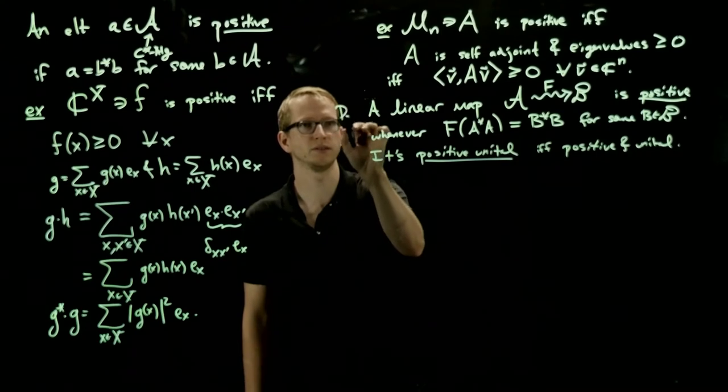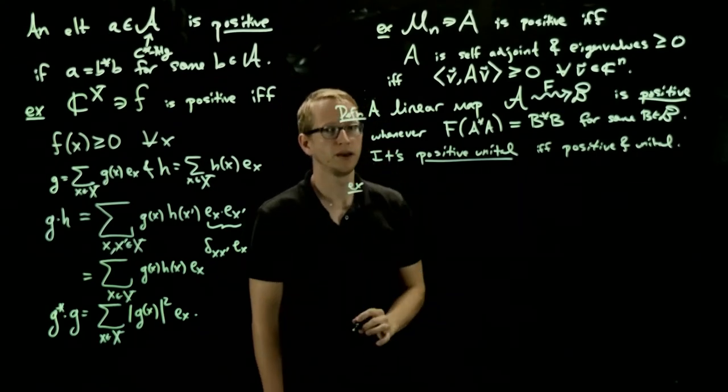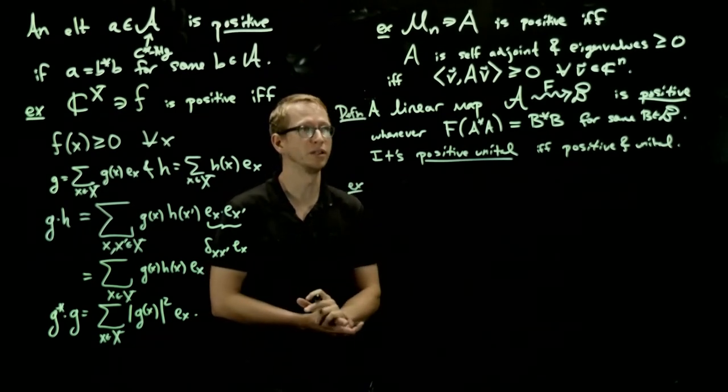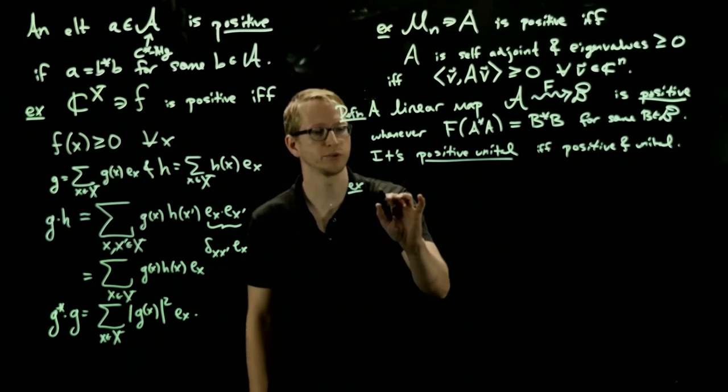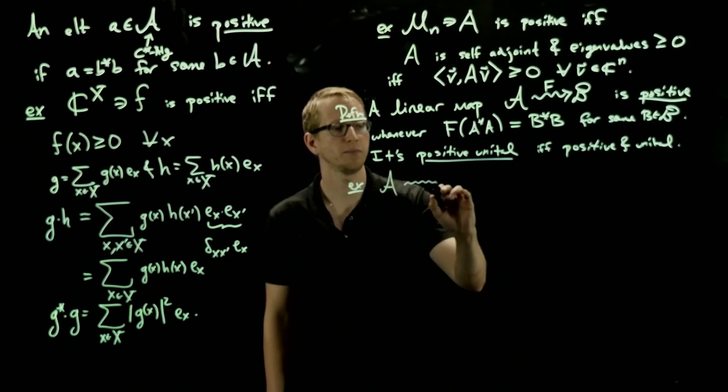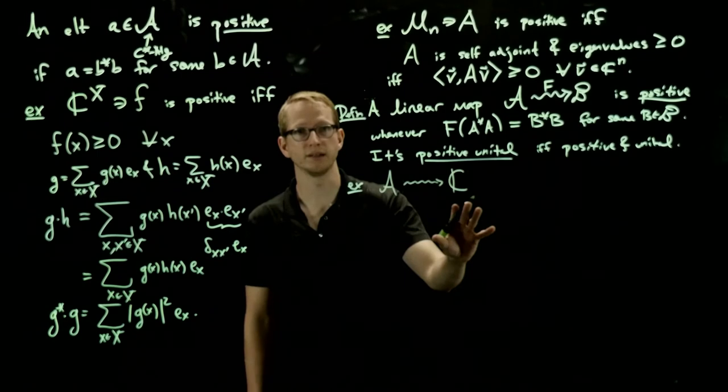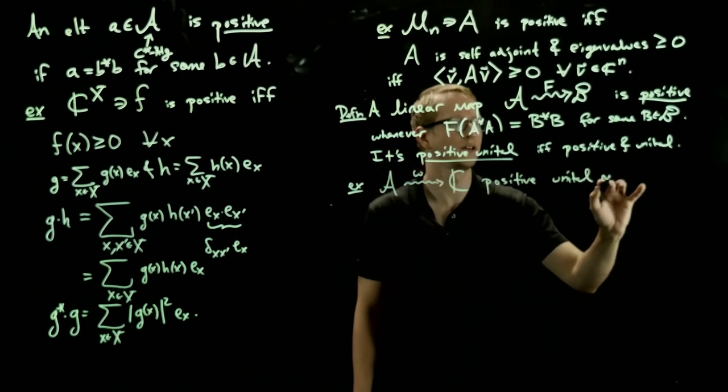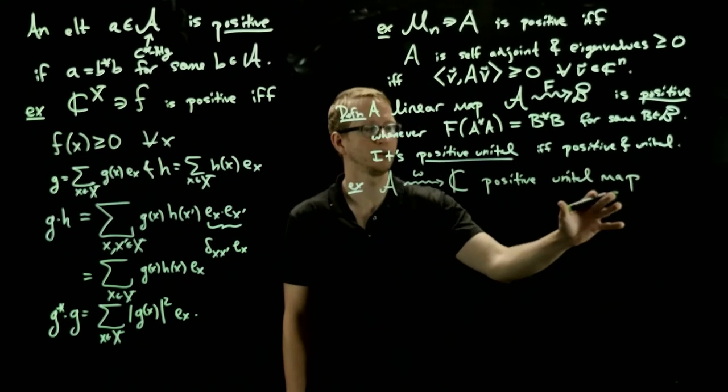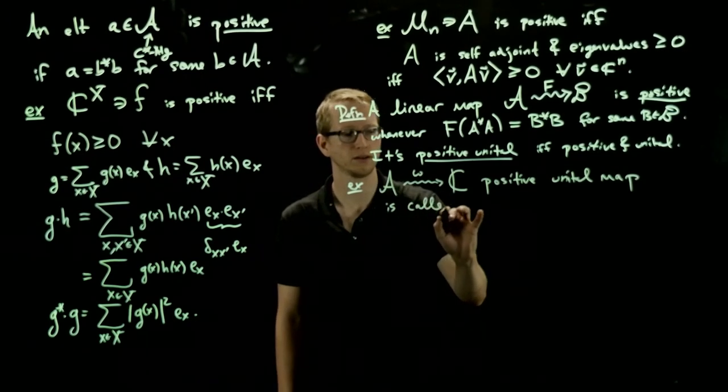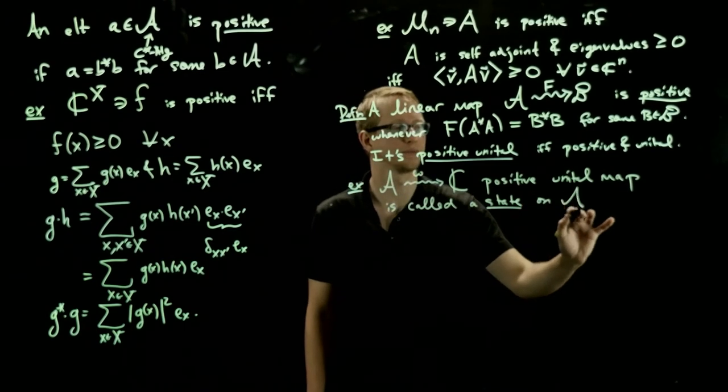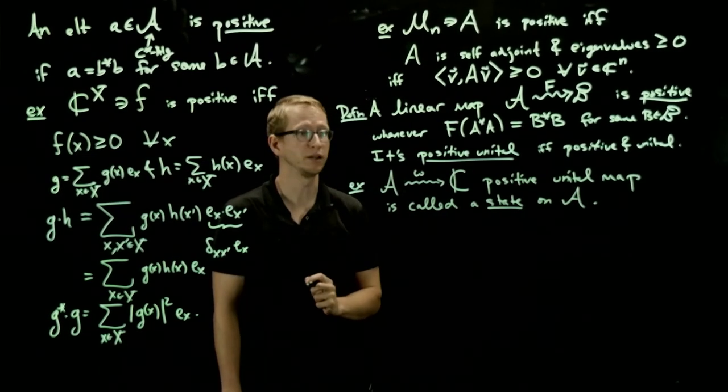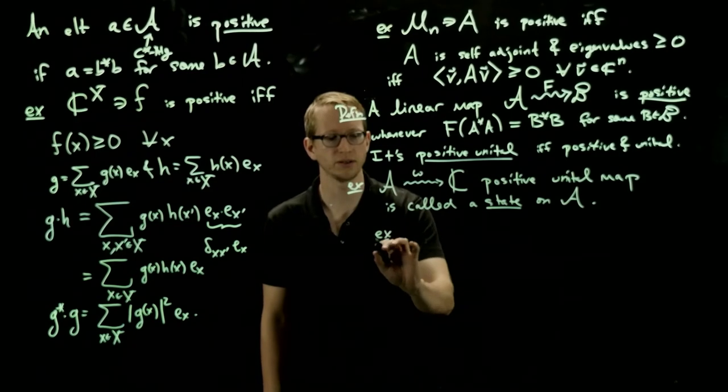So let's look at some examples. Let's write that this is our definition. Let's look at some examples of positive unital maps between C star algebras, some of the C star algebras that we've been looking at. First, let's look at if we have an algebra A, and we take a positive unital map from A to the complex numbers. Every such positive unital map is called a state on A. And we'll see why it's called a state perhaps in a moment.